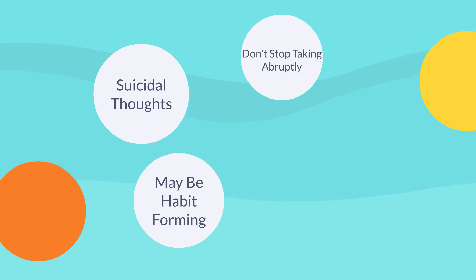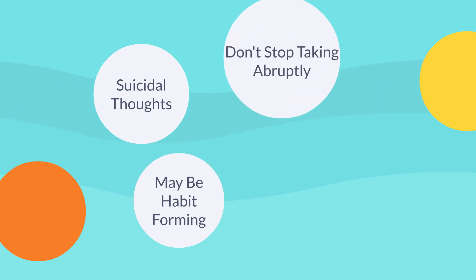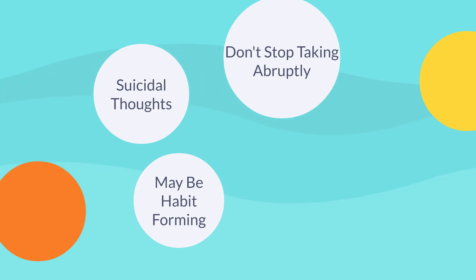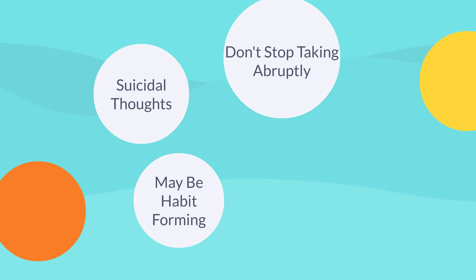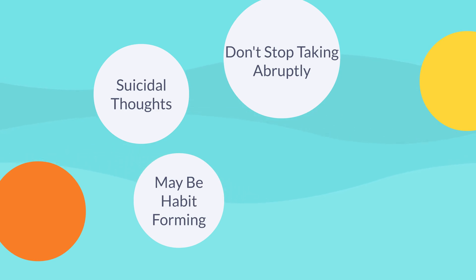Thirdly, it is recommended not to discontinue gabapentin abruptly. Whenever you want to come off gabapentin, work with your doctor or healthcare provider, as they will most likely taper you off. This is especially important if you are taking it to prevent seizures, since abrupt discontinuation may result in status epilepticus — continuous seizures. Do not stop gabapentin cold turkey.